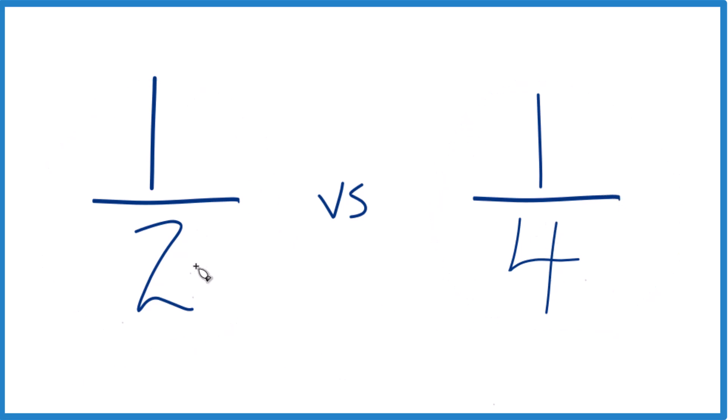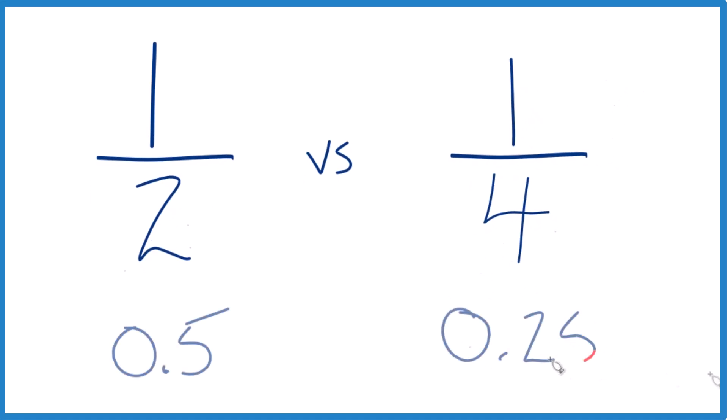You could just divide one by two on a calculator or one by four on a calculator. You'd get 0.5, that's larger than 0.25, so one-half, that's bigger than one-fourth of a cup.